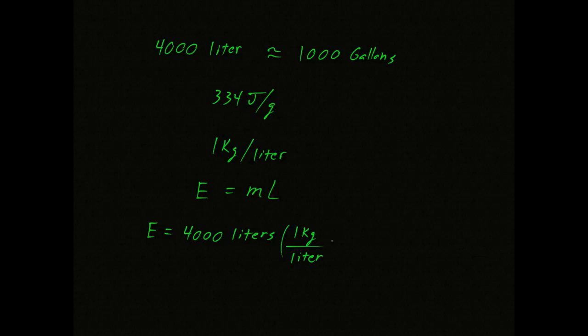Let's take a look at the math and see how effective it can be. Let's start with a 4,000 liter tank. That's about 1,000 gallons. Now, we stated earlier that the heat of fusion is 334 joules per gram, and water weighs 1 kilogram per liter. Energy is equal to the mass times the latent heat. So if we put all this together, we'll find that the energy is equal to 1.34 gigajoules.